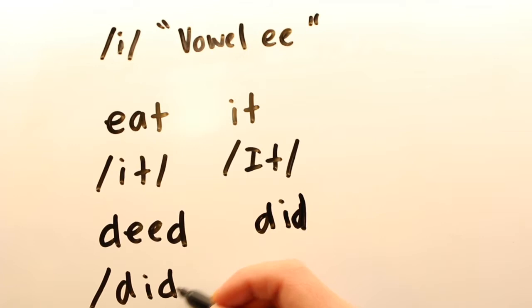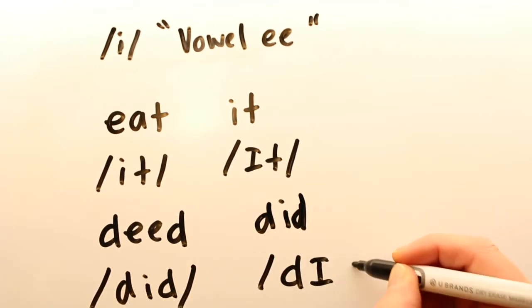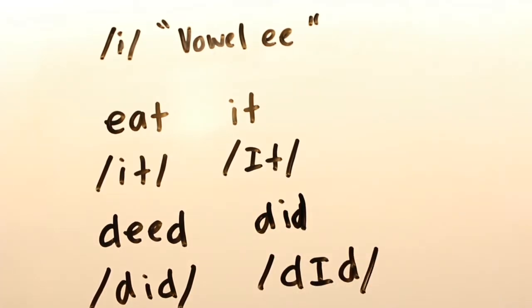In American English, the duration of the vowel depends on the phonetic context. It's longer in stressed words and longer before voiced consonants. For example, the vowels before a T, as in eat and it, are short, but before a D, as in deed and did, they are long.